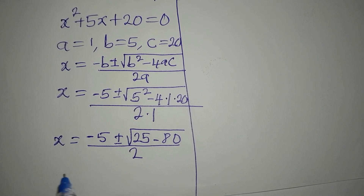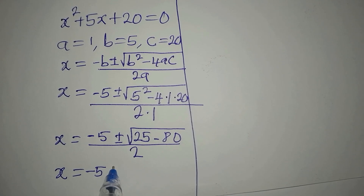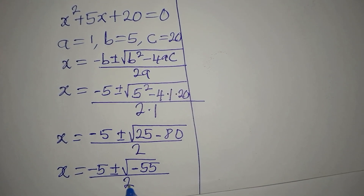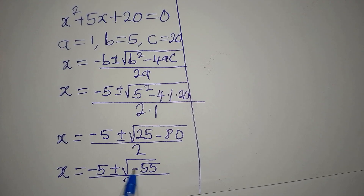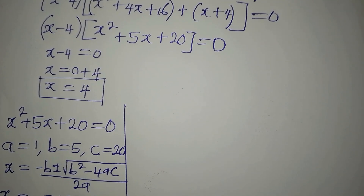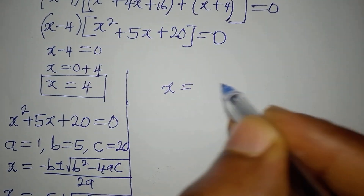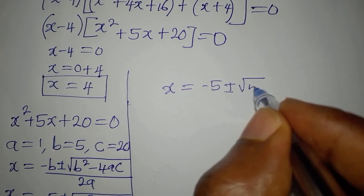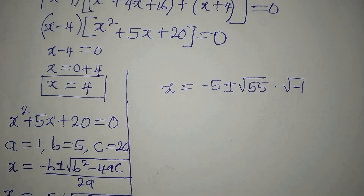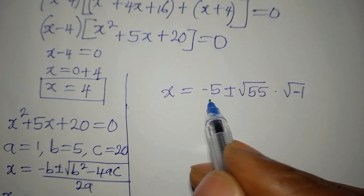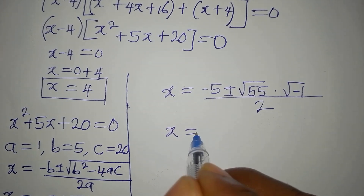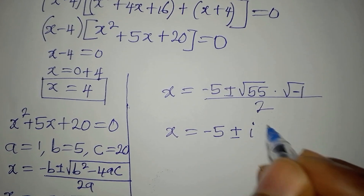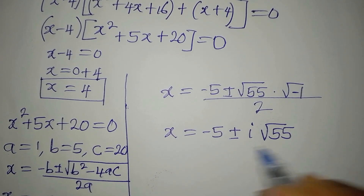From here, x equals minus 5 plus or minus the square root of negative 55, divided by 2. We factor out the negative: the square root of negative 55 becomes the square root of 55 times the square root of negative 1, which is i. So x equals minus 5 plus or minus i times the square root of 55, all divided by 2.